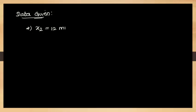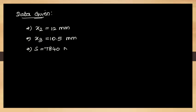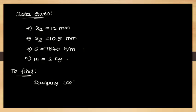We can note down the significant data given in the problem. The amplitude of the second cycle X2 is 12 mm, and the amplitude of the third cycle X3 is 10.5 mm. Stiffness of the spring S is 7840 N/m, and mass of the block M is 2 kg. It is asked to find the damping coefficient of the damper used in the system.